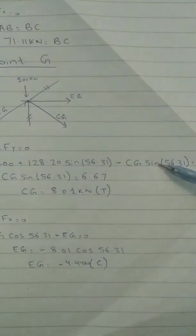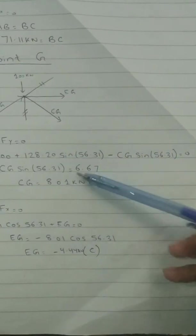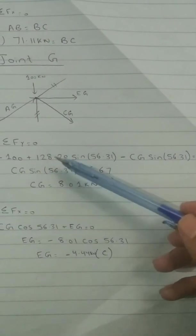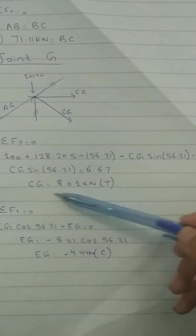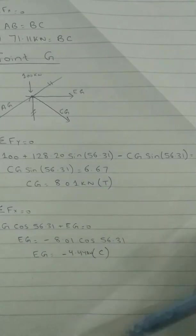It is acting downward taking its y component, so we have written its equation. Putting the value of AG here, the force in member CG is calculated at 8.01 kilonewton. It is in tension.